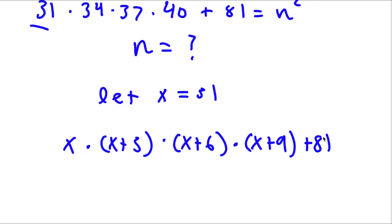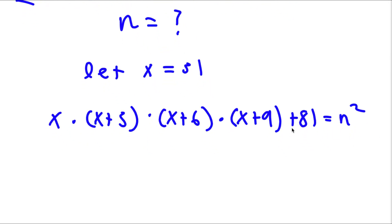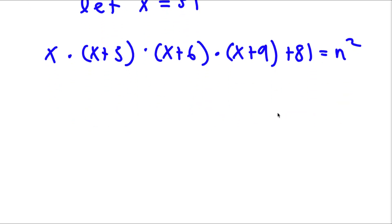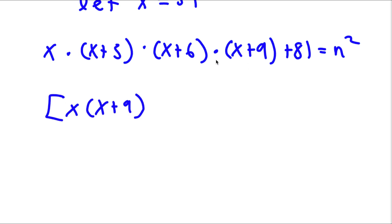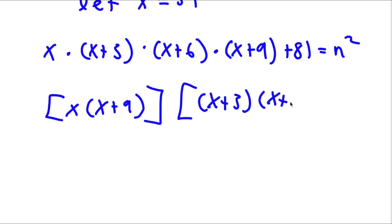Plus 81 — we are not going to change 81 — this is equal to n squared. Now if I rearrange these, I can rewrite this as x times (x + 9), bringing x and (x + 9) together, times (x + 3)(x + 6), plus 81, equals n squared.